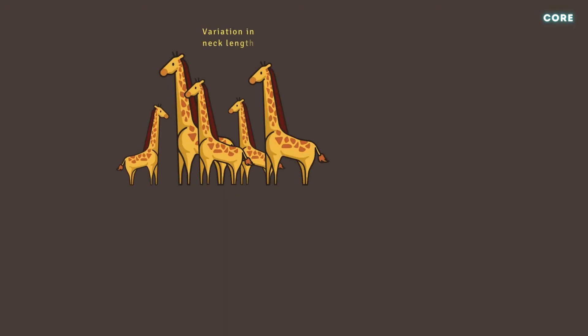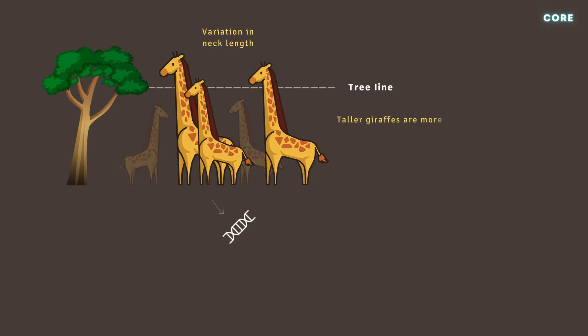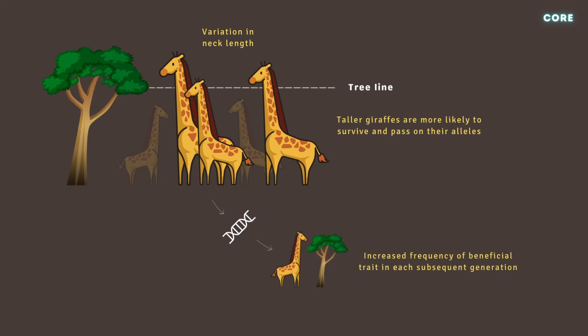Take a population of giraffes with significant variation in neck length. In an environment with limited trees or only very tall trees, the giraffes with the longest necks have an advantage, in that they can reach leaves that shorter giraffes cannot. The long-necked giraffes therefore have a greater chance of surviving and passing on their alleles to the next generation, some of which code for the beneficial trait. In this way, giraffes with long necks will become more common and eventually replace the less well-adapted varieties.